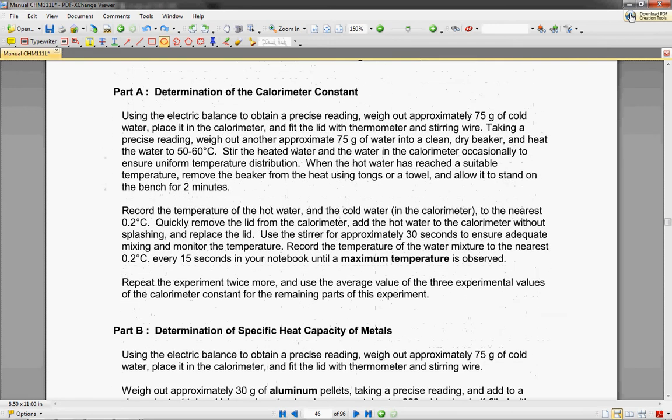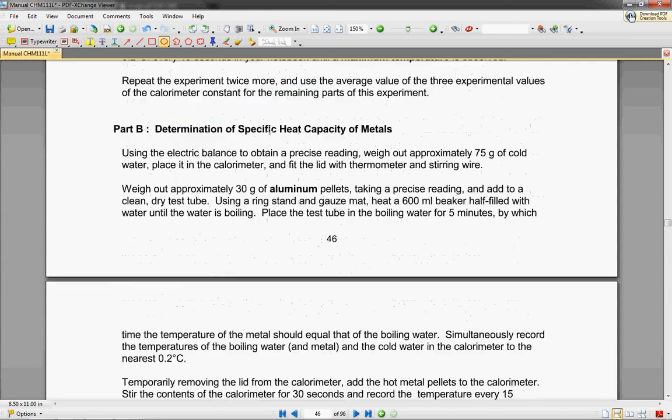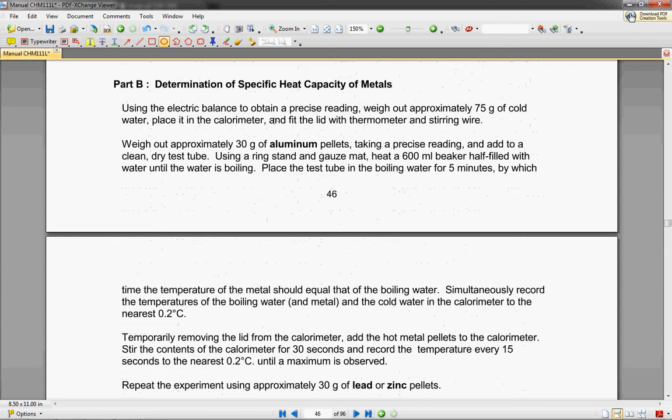So, the first thing we have to do is remember that efficiency procedure, or that efficiency calculation, we have to find the efficiency. So we're going to do that by weighing out some cold water and putting it in the calorimeter. And then we're going to weigh out some more water and heat it up to about 50 to 60 degrees C. And we're going to mix them together and record the temperature of the mixture. And that will help us figure out what the efficiency of our calorimeter is. So we're going to repeat the experiment twice more just to get a good average value of three runs, just to make sure that you have a really good calculation.